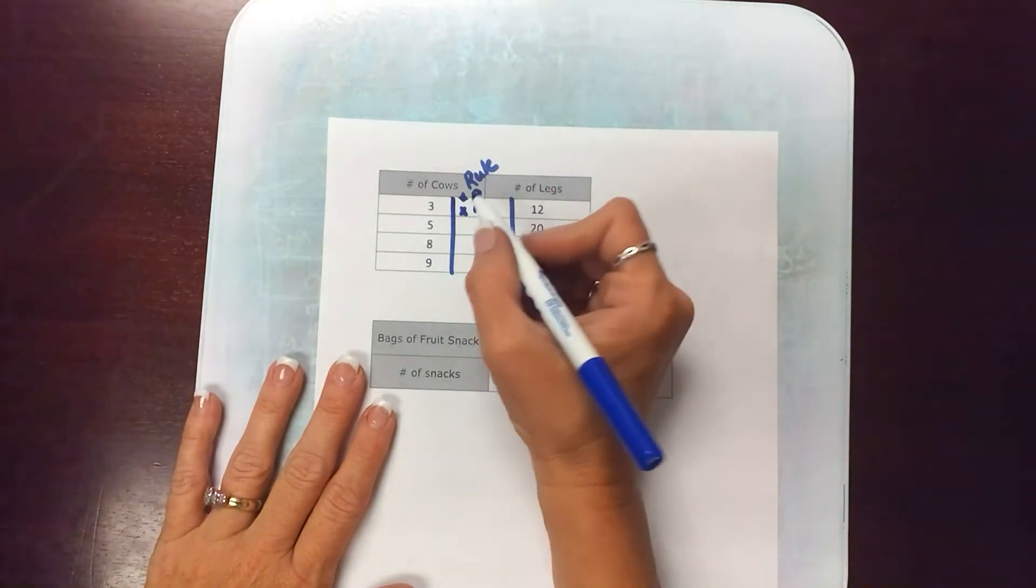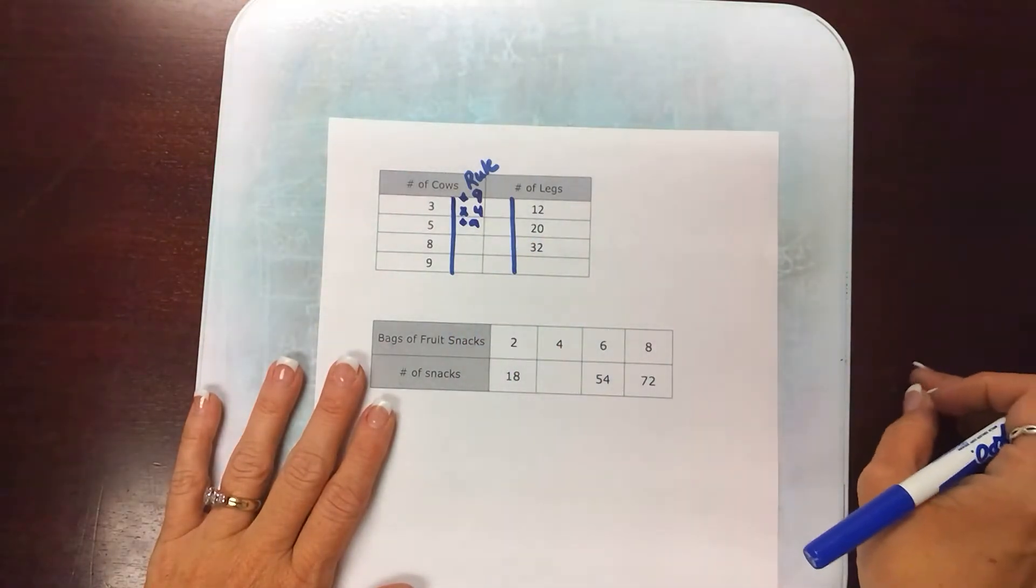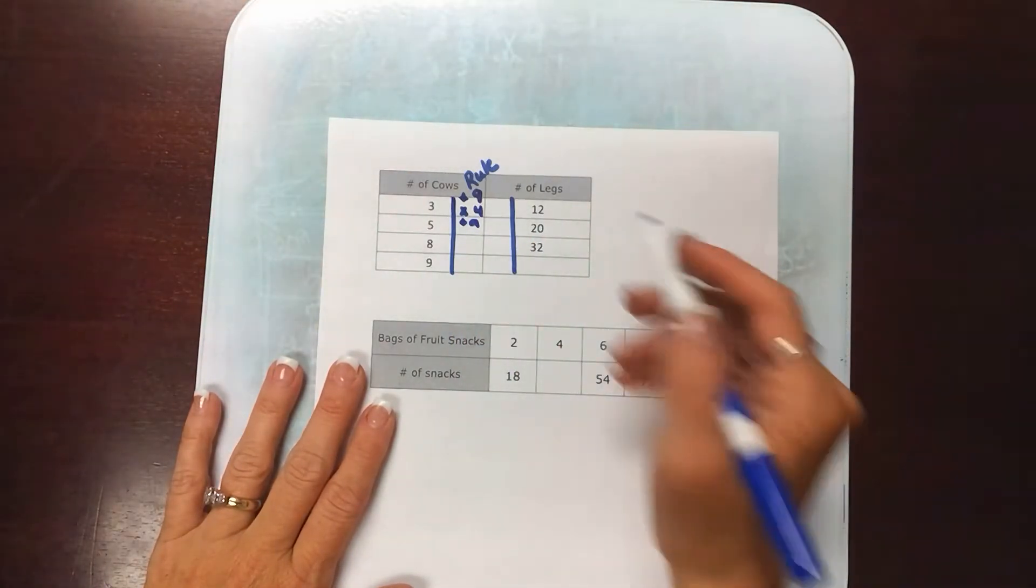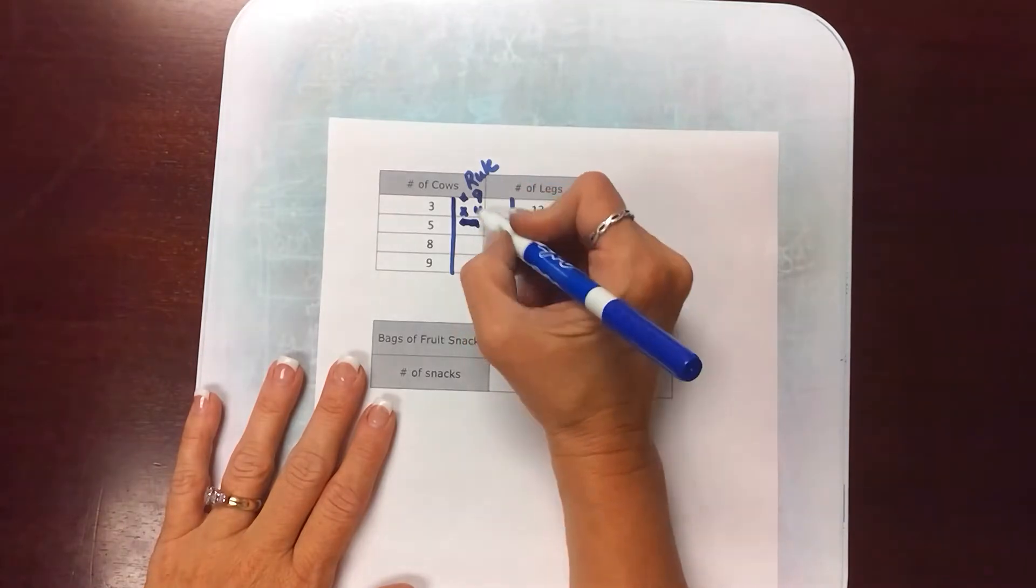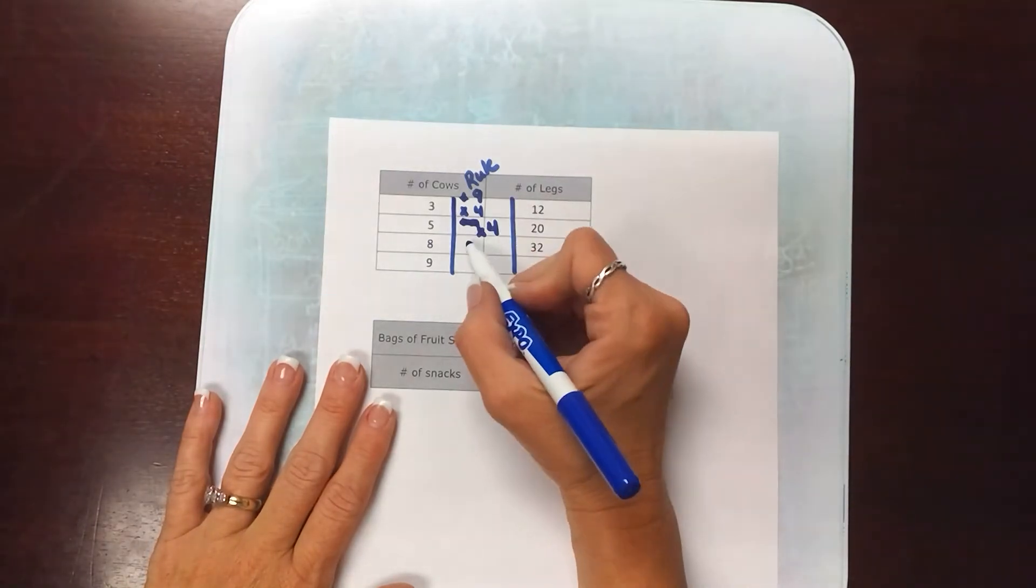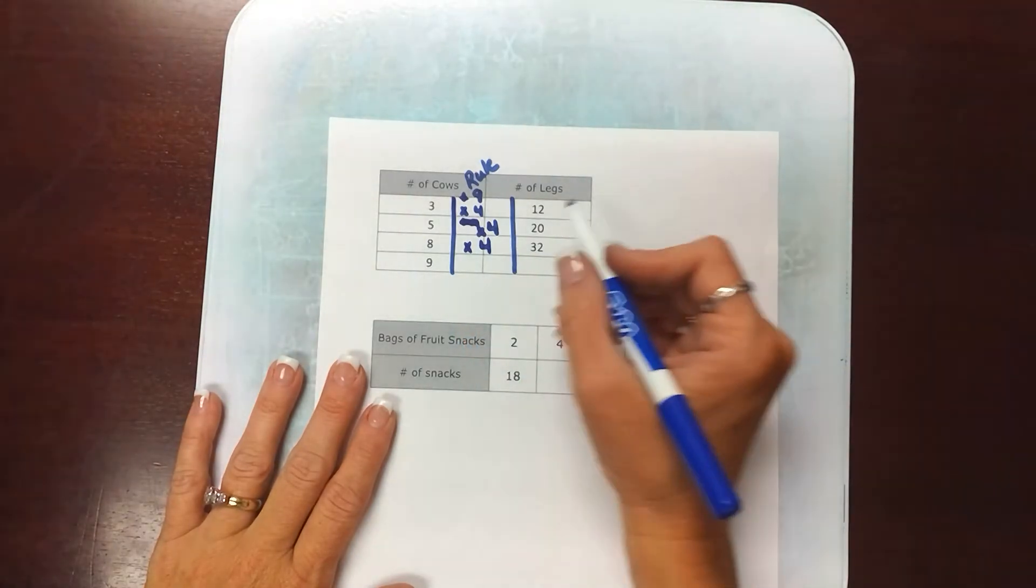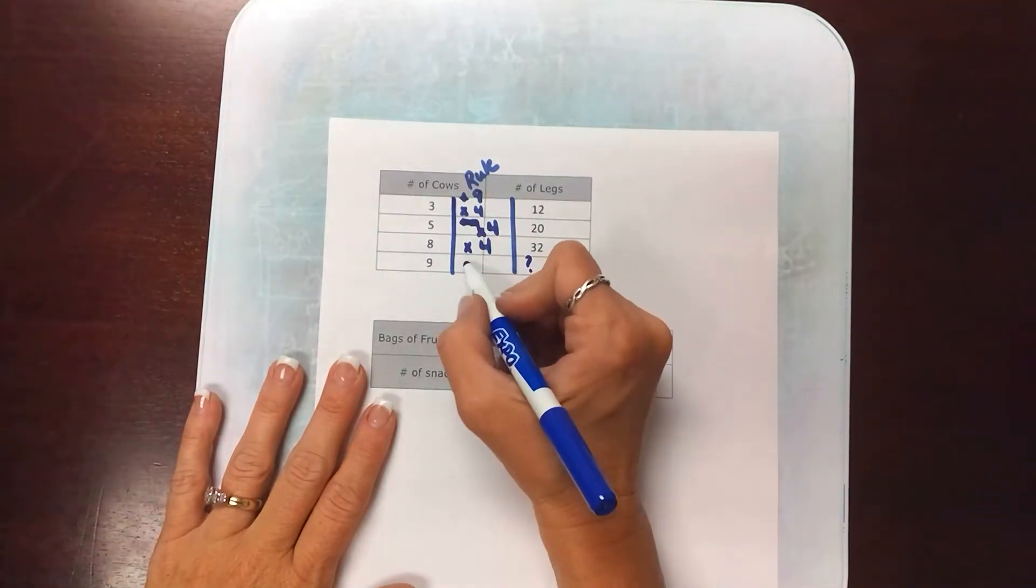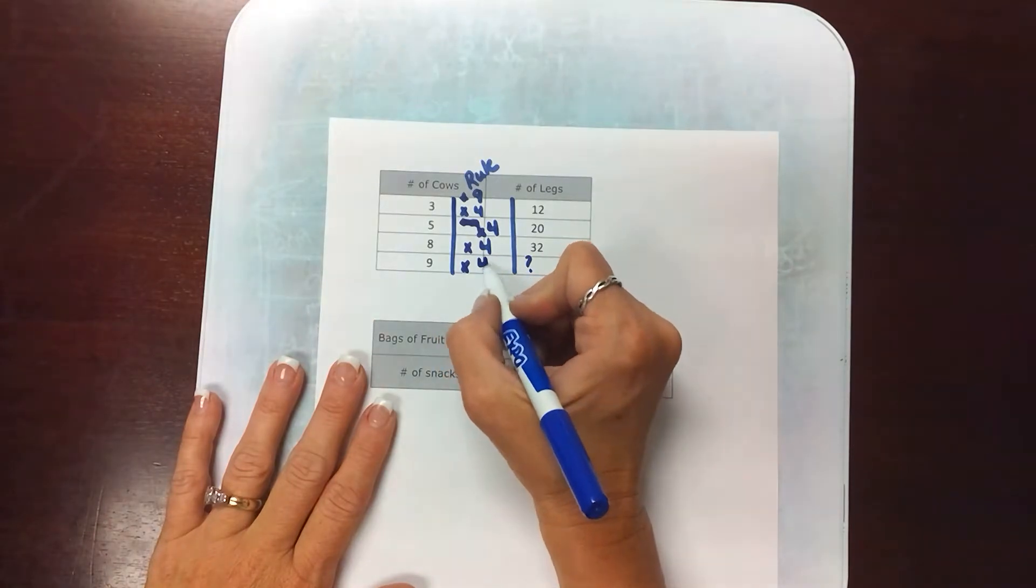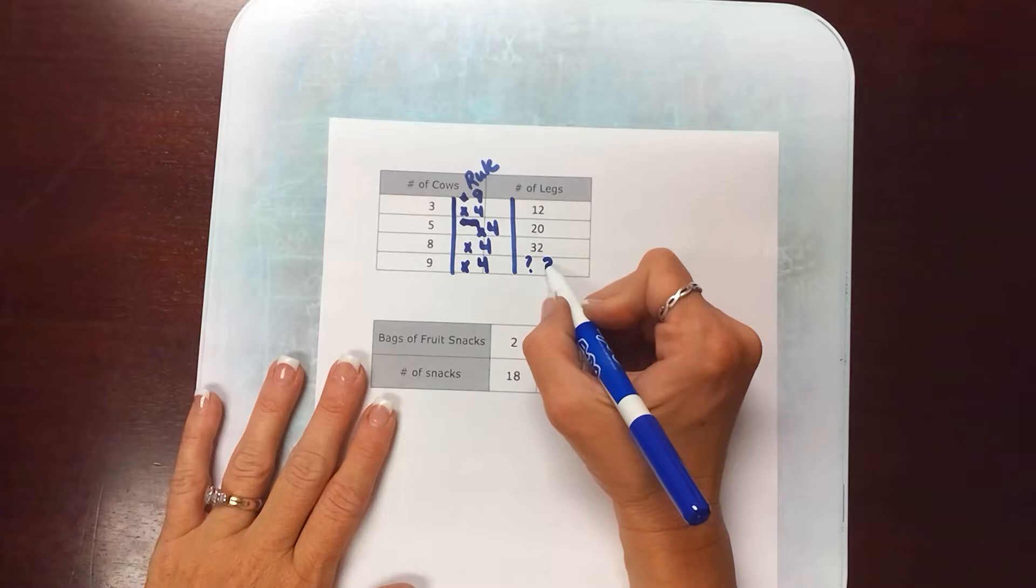Both of those work. Let's try adding 9. Is 9 plus 5 twenty? No, so that can't be our rule. Is 5 times 4 twenty? Yes, 5 times 4 is 20. Is 8 times 4 thirty-two? Yes. So to find this output I have to do 9 times the rule of 4, times 4, and it is 36.